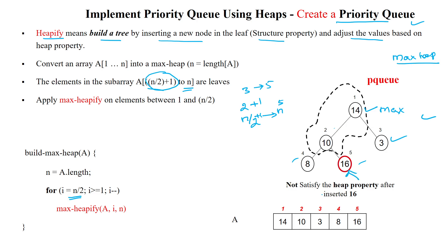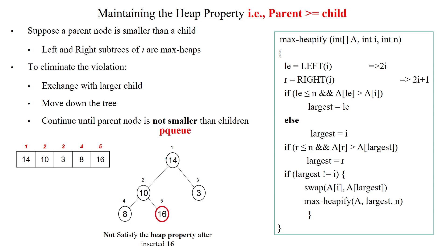Now we are inserting a new node with value 16. Once 16 is inserted, the heap property is not satisfied. Our max heap property requires the parent node to be greater than the child, but here 16 is the child which is greater than its parent — so the parent node is less than the child. We have to apply the heap property using the heapify process.